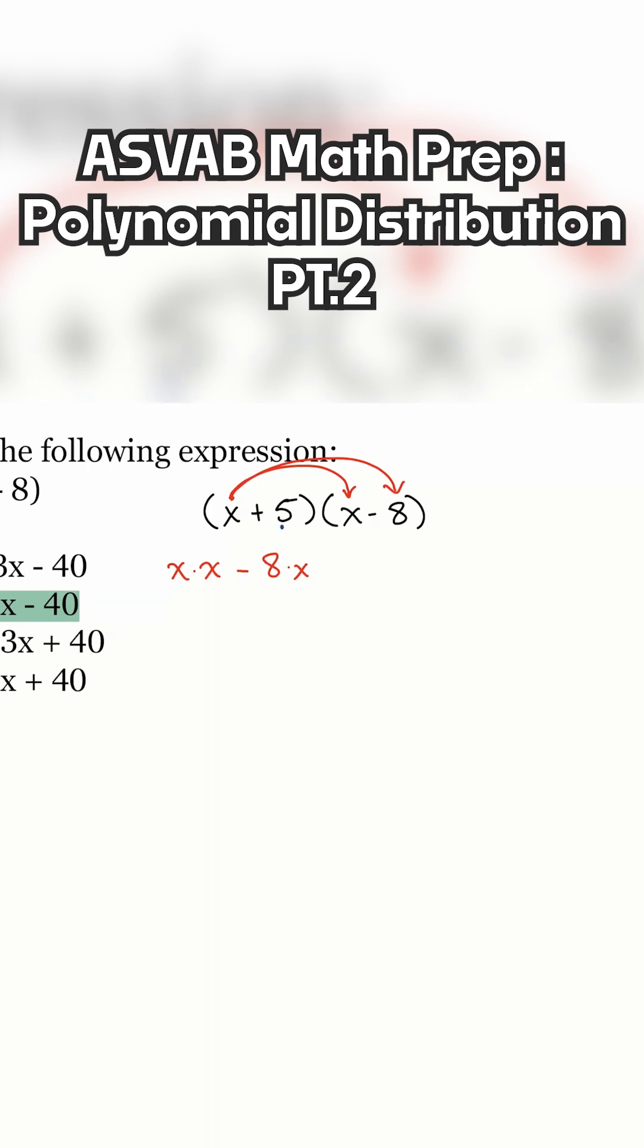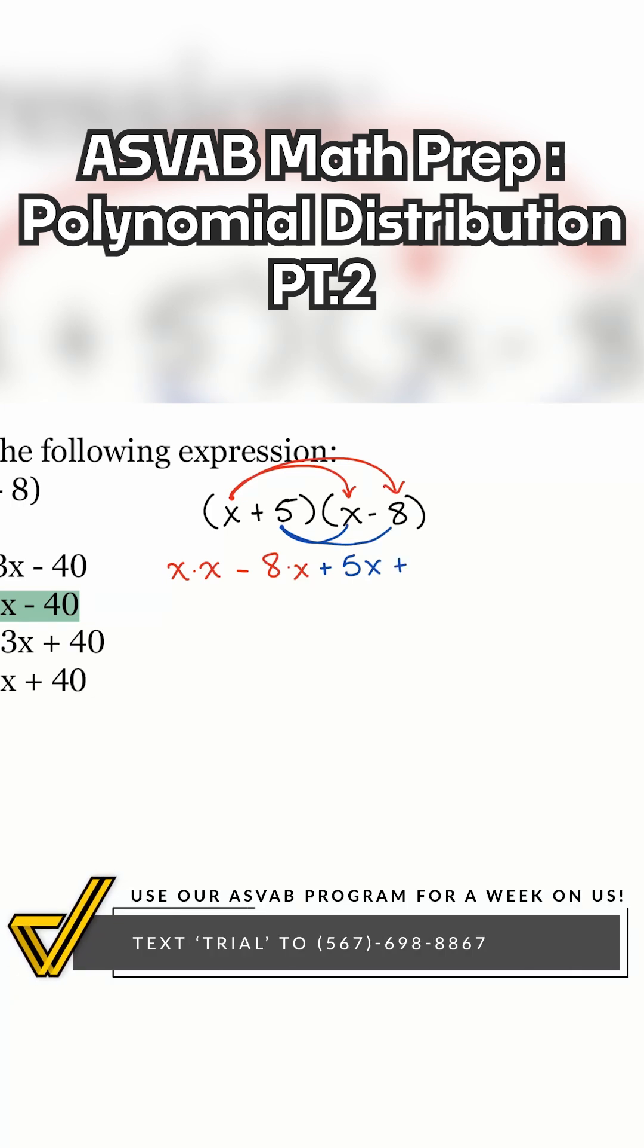Now I'm going to make sure that the five multiplies with everything from the parentheses. Multiplied by the x, so that's plus five x. Then multiply the five with negative eight. So that'll be five times negative eight.